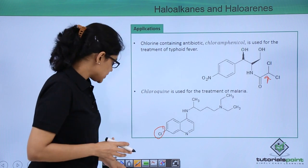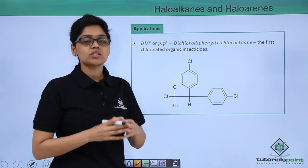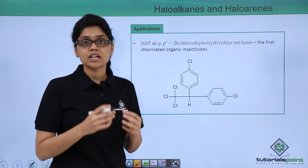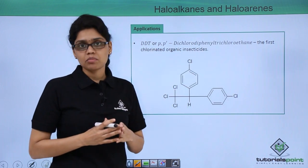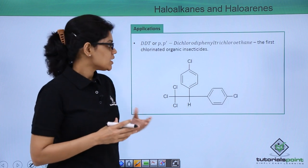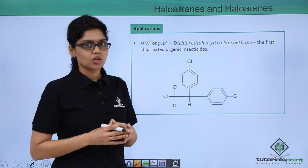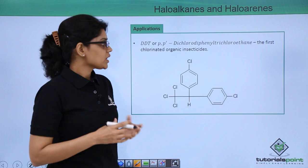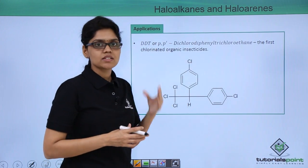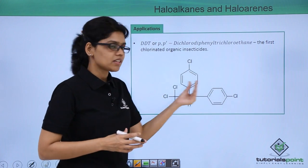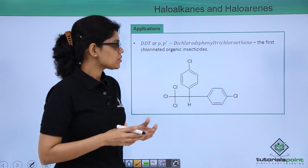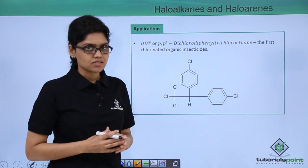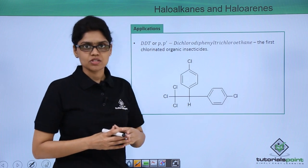Lastly, DDT — one of the first chlorinated organic insecticides which had wide-scale application in agriculture — is an example of a compound that is both a haloalkane and haloarene. Here we have chlorine atoms attached to an aromatic system, that is two phenyl rings, as well as a chlorine atom attached to an aliphatic carbon having SP3 hybridization state.